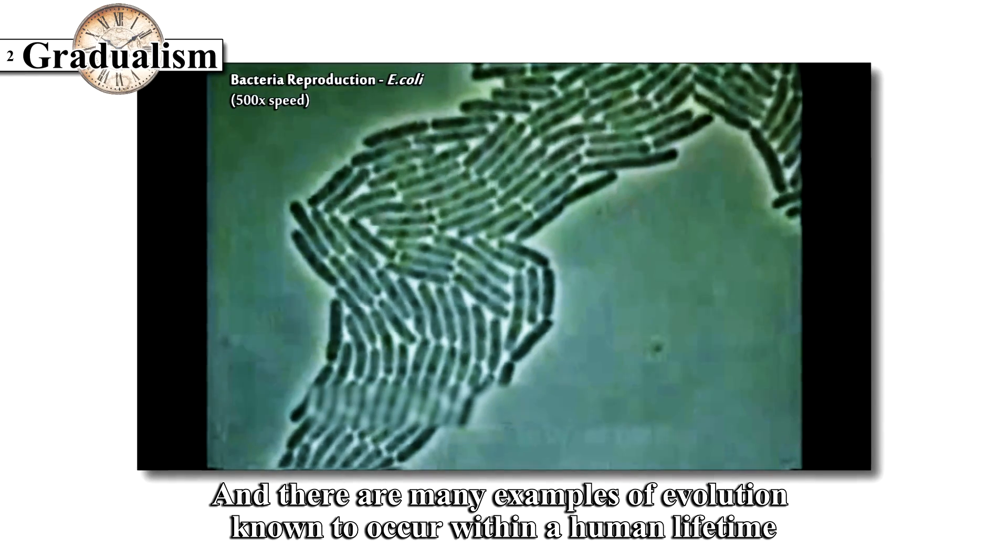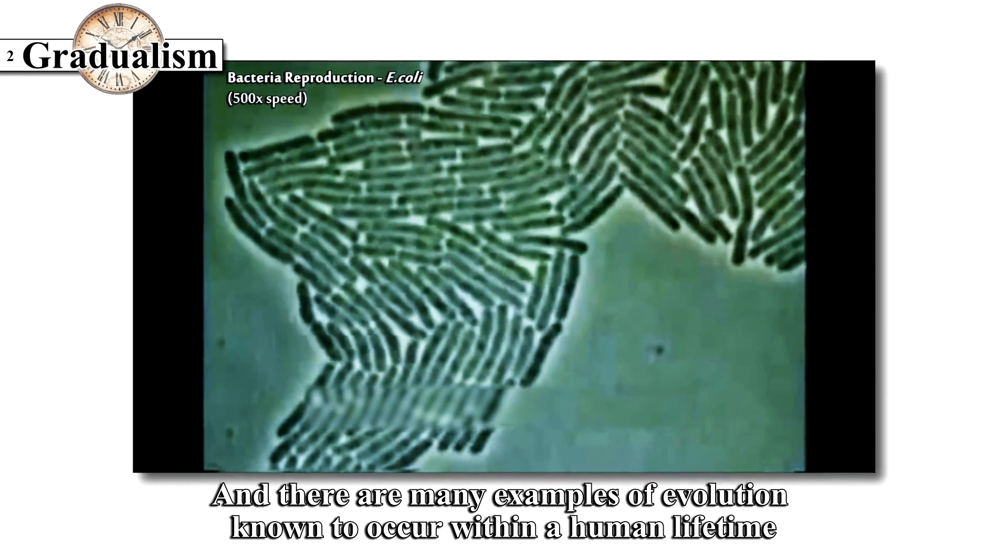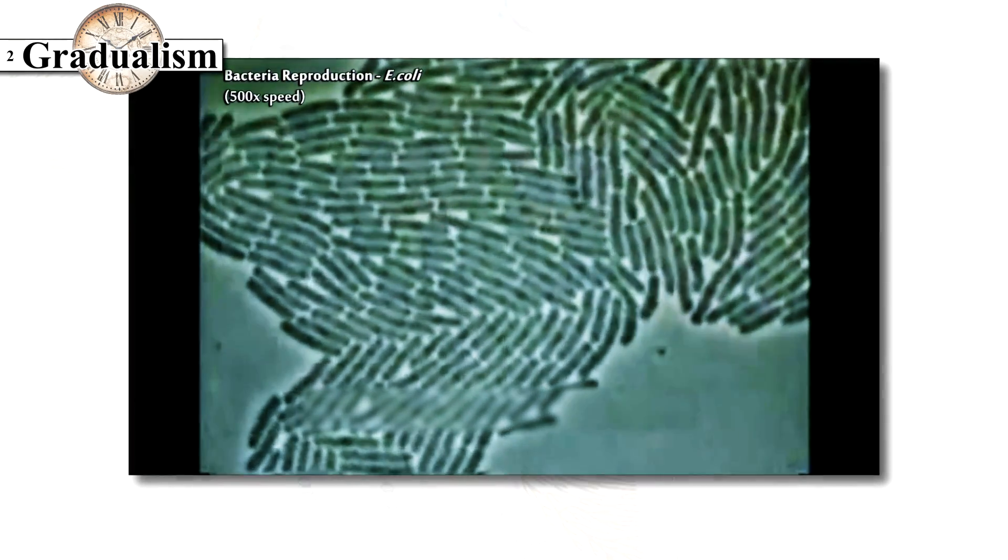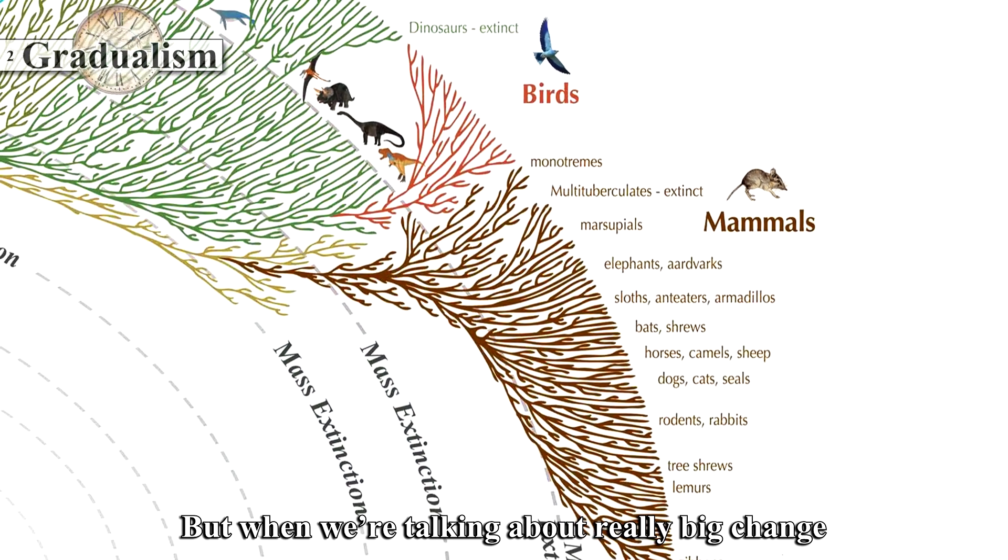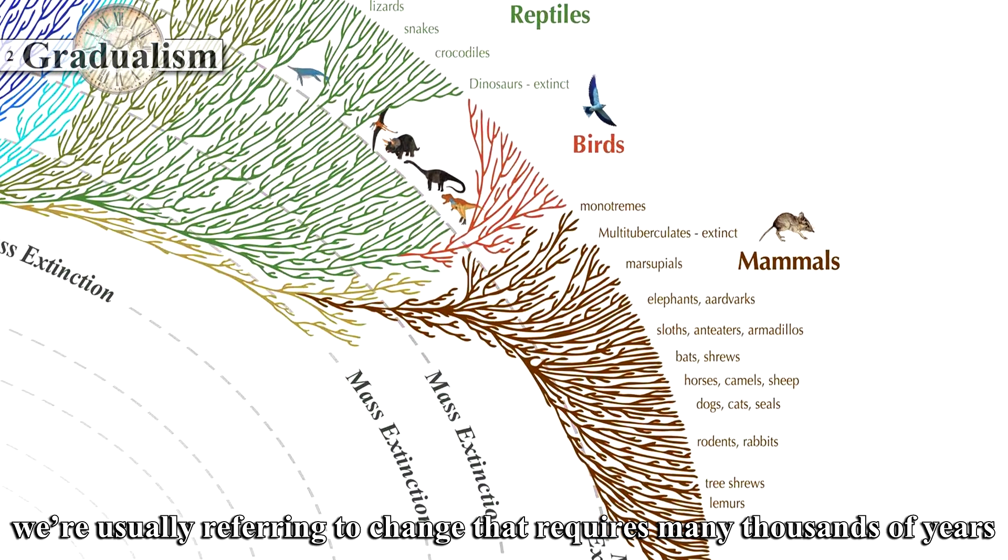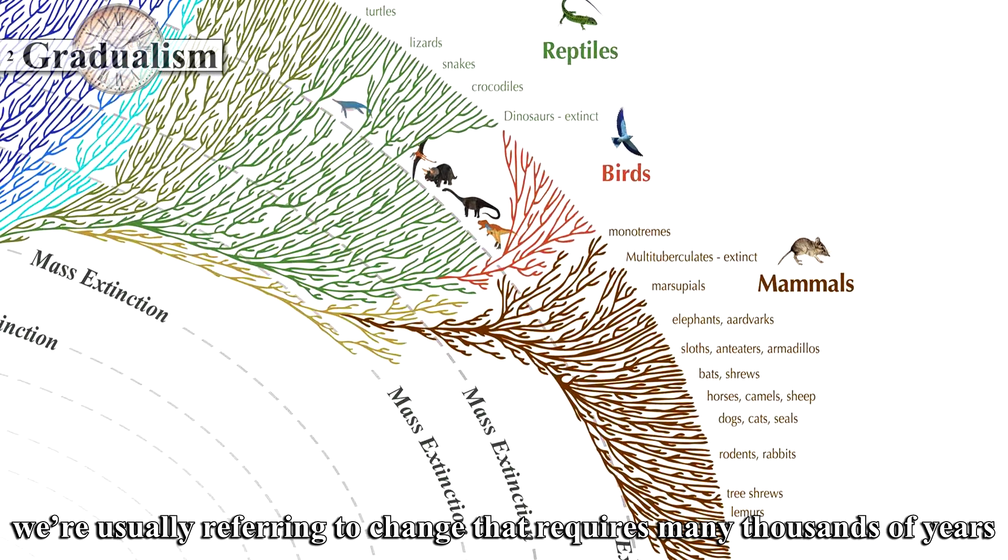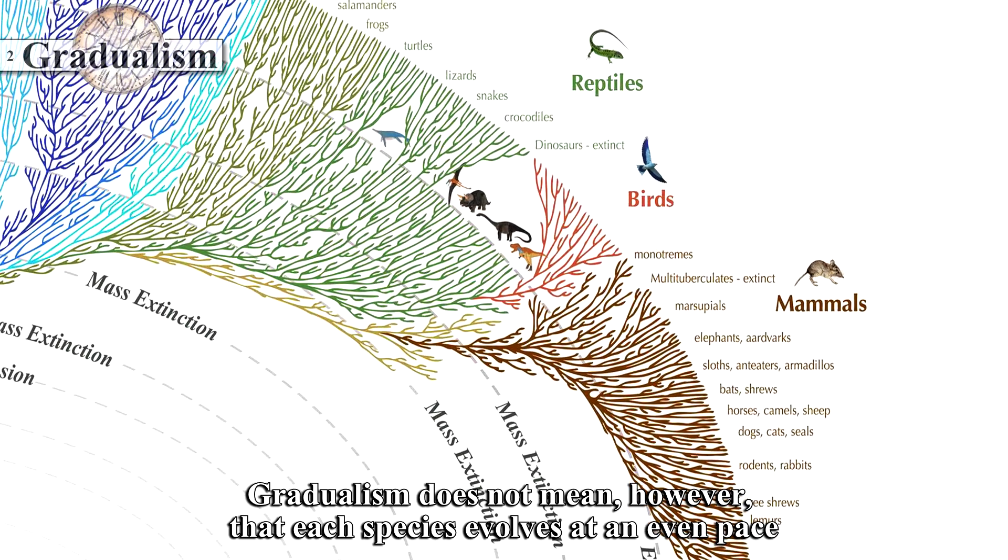And there are many examples of evolution known to occur within a human lifetime. But when we're talking about really big change, we're usually referring to change that requires many thousands of years.